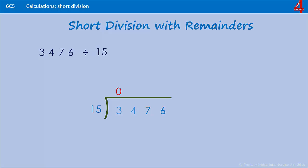15 into 34, 2 lots of 15 is 30, so that goes in twice and there's 4 left over. Put that 4 with the 7. 15 into 47, 3 lots of 15 make 45 and that's 2 left over. 15 into 26. We can't get 2 lots of 15 in there because 2 lots of 15 is 30, so we can get only 1 lot of 15 into 26 and that leaves us with 11.